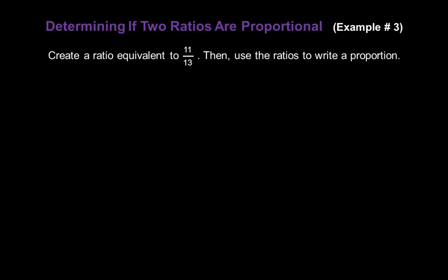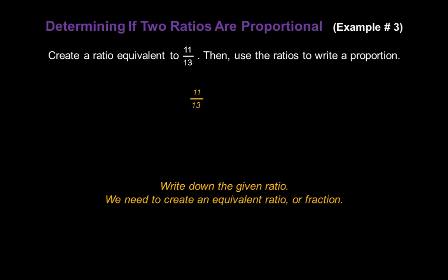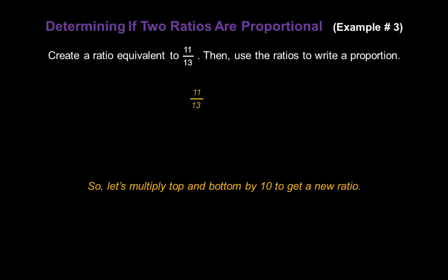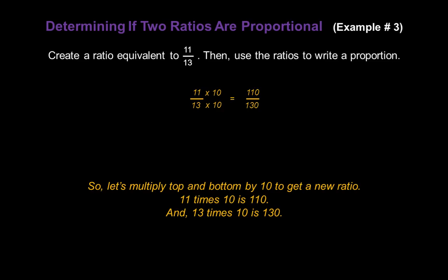Now let's create a ratio that's equivalent to 11 over 13, and then use those ratios to write a proportion. There are an infinite number of equivalent ratios we can create by multiplying the numerator and denominator by the same number. I'm going to multiply the top and bottom by 10: 11 times 10 gives us 110 in the numerator, and 13 times 10 gives us 130 in the denominator. So our proportion is 11 over 13 equals 110 over 130.